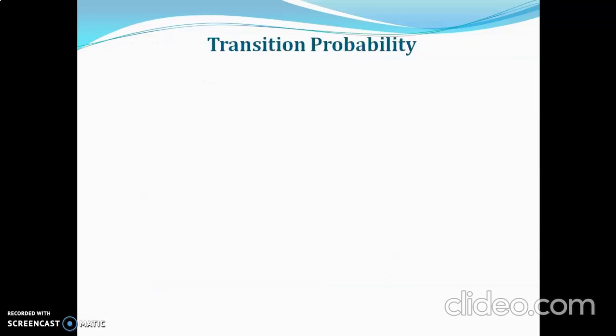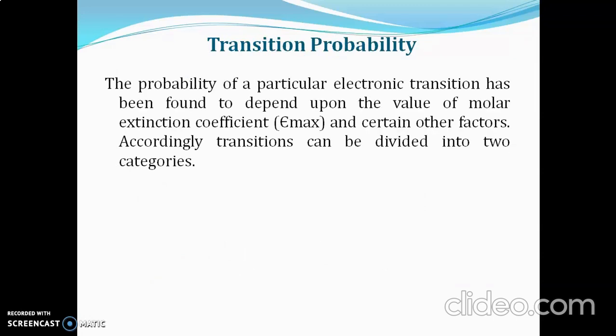Transition probability depends on the molar extinction coefficient (Emax) and other factors. Molar extinction coefficient is an intrinsic property of a molecule that depends on its structure. If the compound is highly complex with many unsaturation points, double bonds, or a conjugated system, the Emax is higher. If the molecule is a simple saturated one, the Emax will be less.